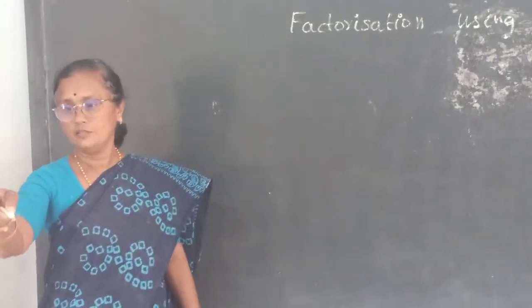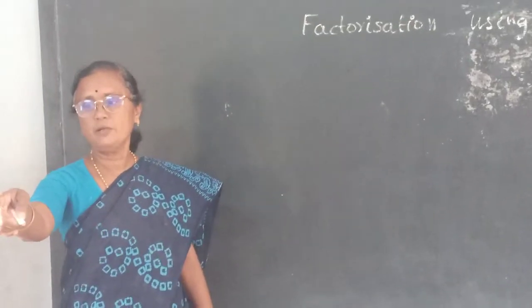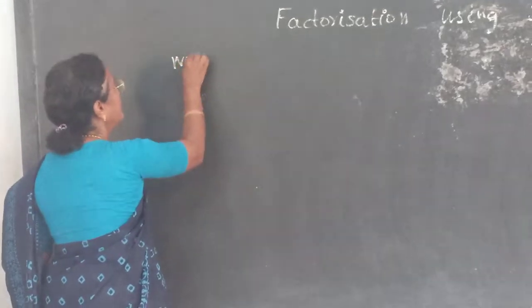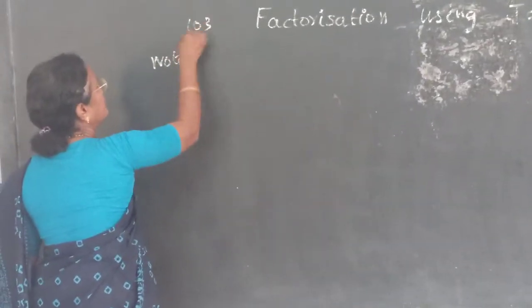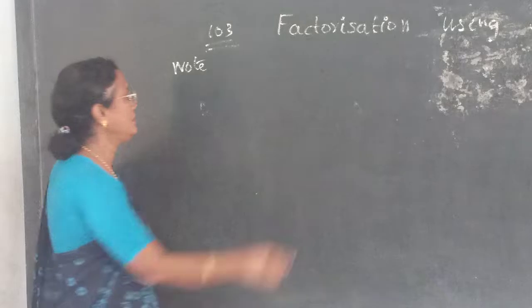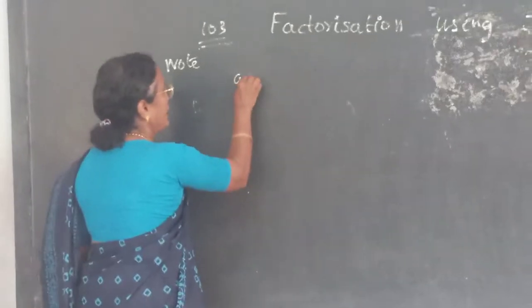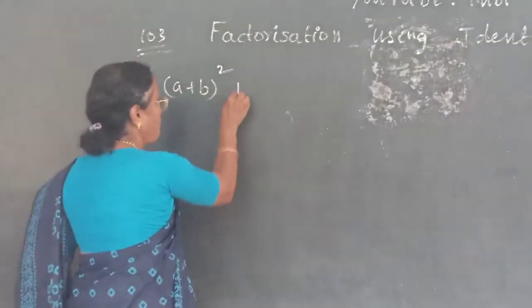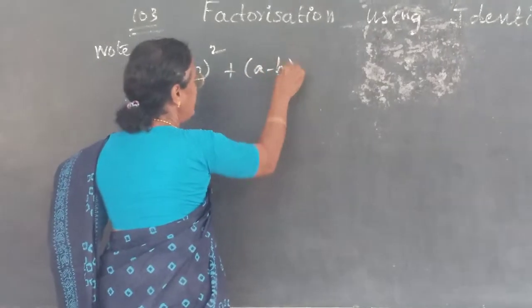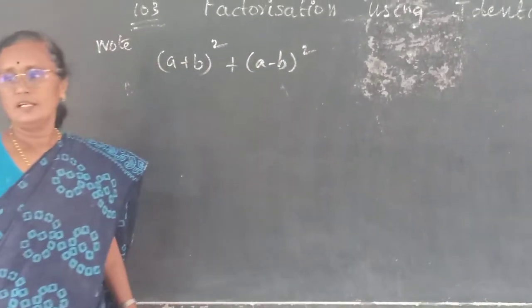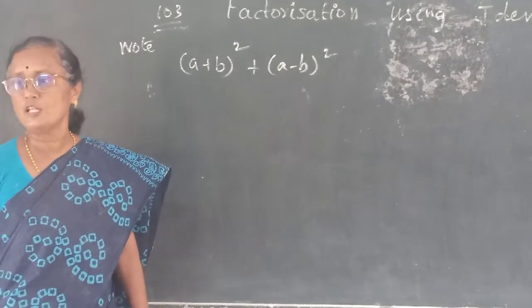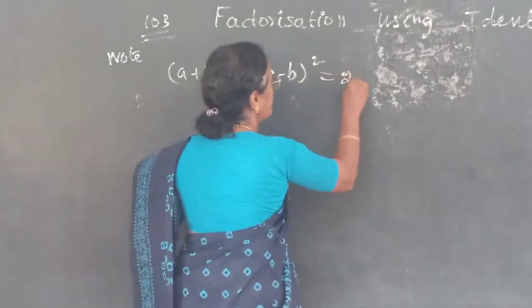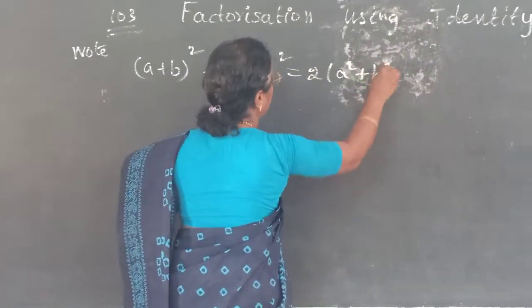I am going to note page number 103. Listen: (a + b) whole square plus (a - b) whole square — the answer is 2 into (a² + b²).